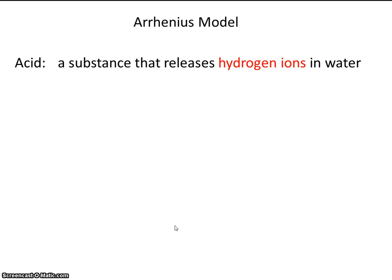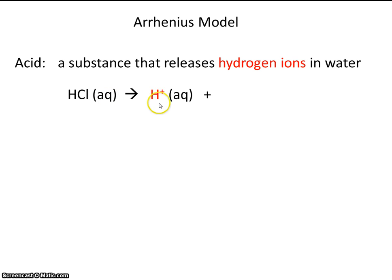First, we have the Arrhenius model. Arrhenius stated that an acid is a substance that releases hydrogen ions in water. You may recognize HCl as hydrochloric acid — it's an acid because when it's dissolved in water, it releases a hydrogen ion. This is something you're probably familiar with on some level already.